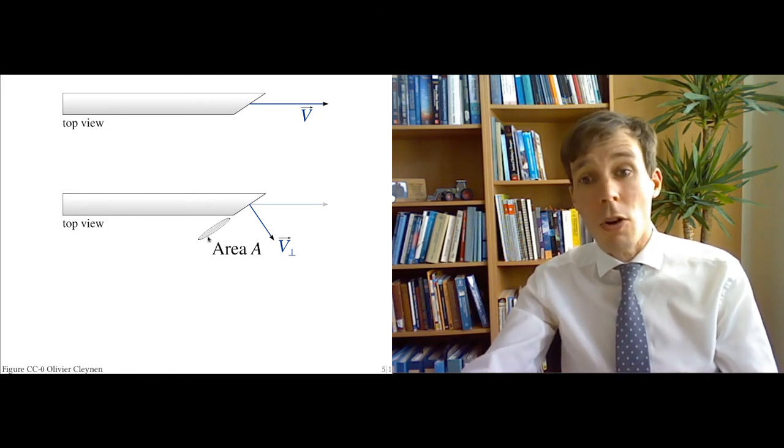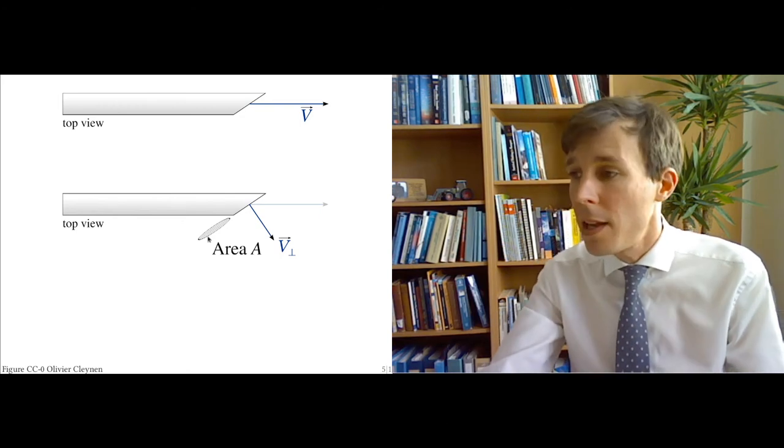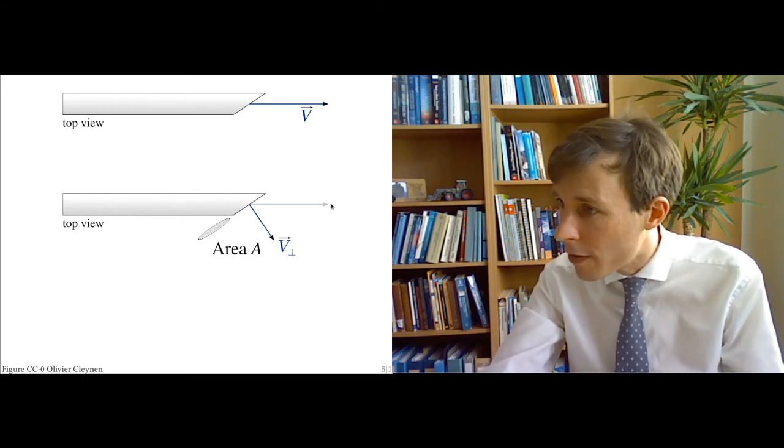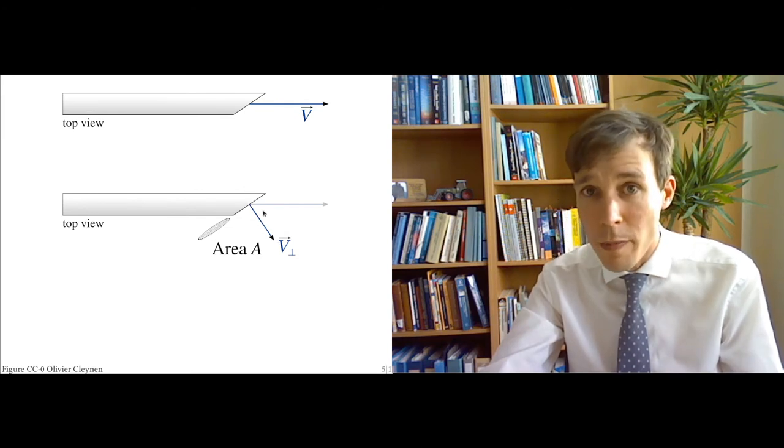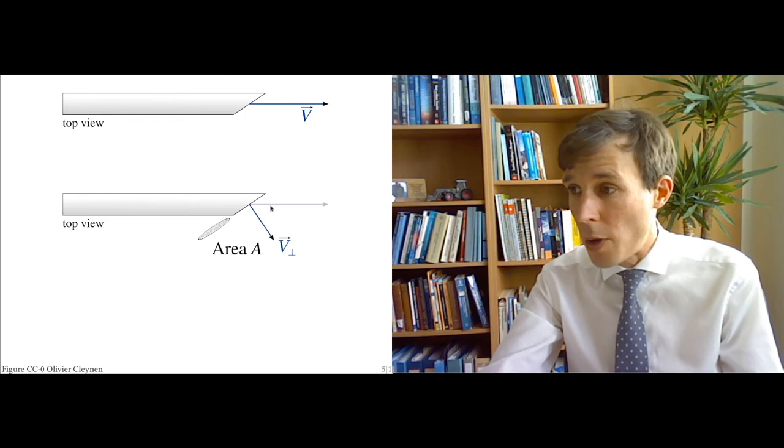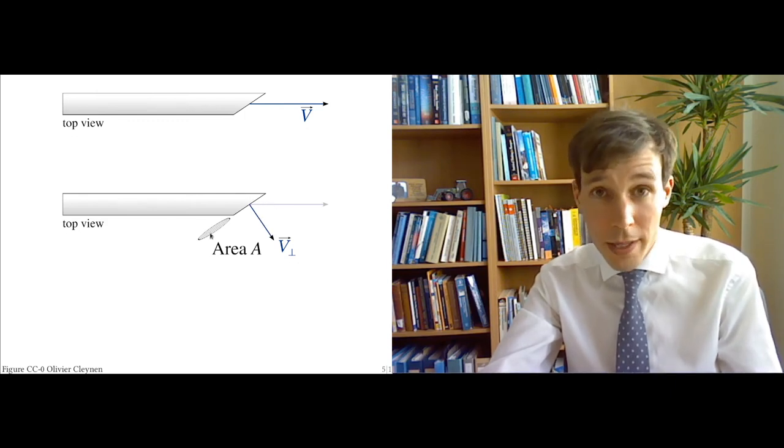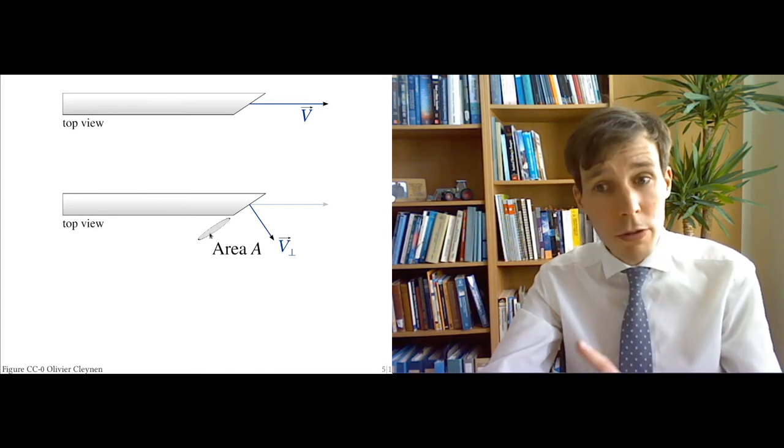And then you have to take the component of velocity that is perpendicular to this area. And so this is the component of the original velocity here. This velocity here has a component there, V perpendicular, that is perpendicular to the area. So you have to project V on perpendicular to the area A here. You could do that.